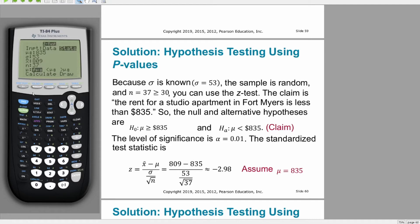Since we have a smaller value here, we're taking a left-tailed test, so we select the mu is less than mu-naught option and calculate.